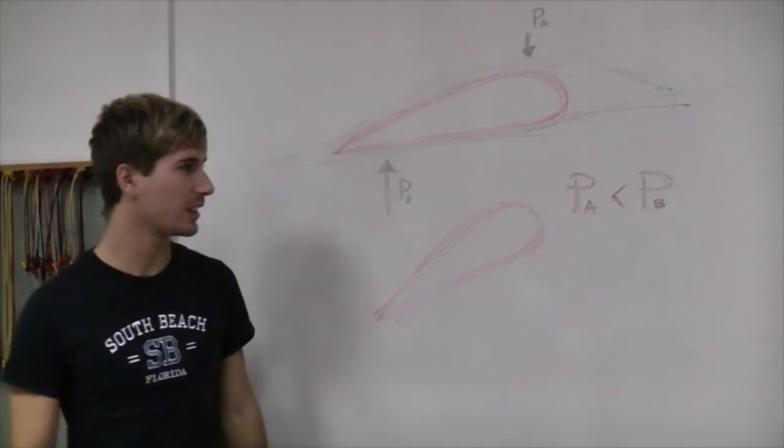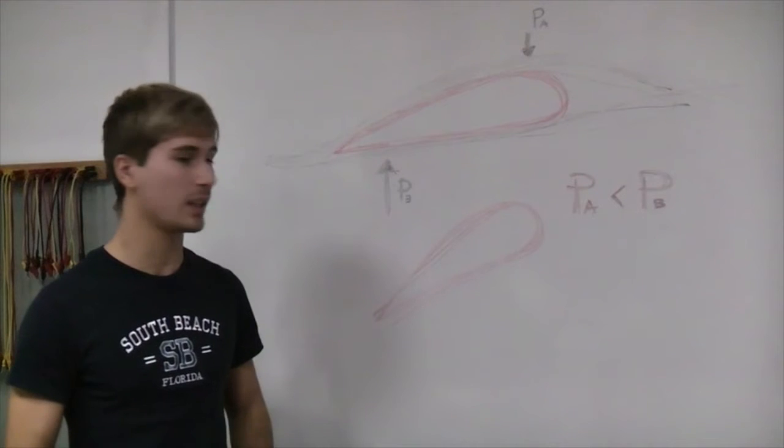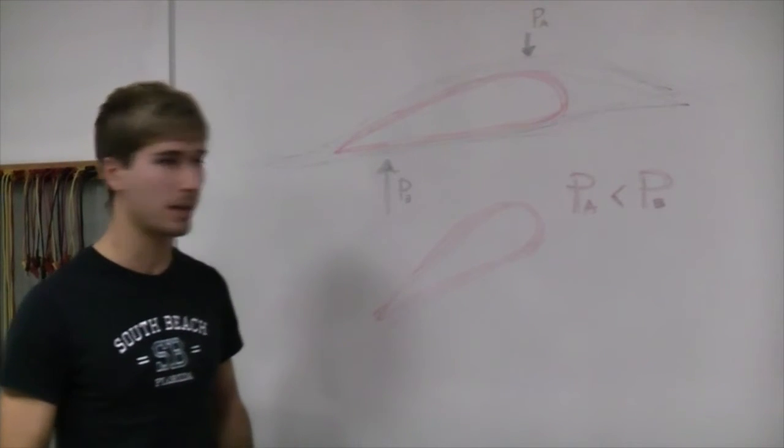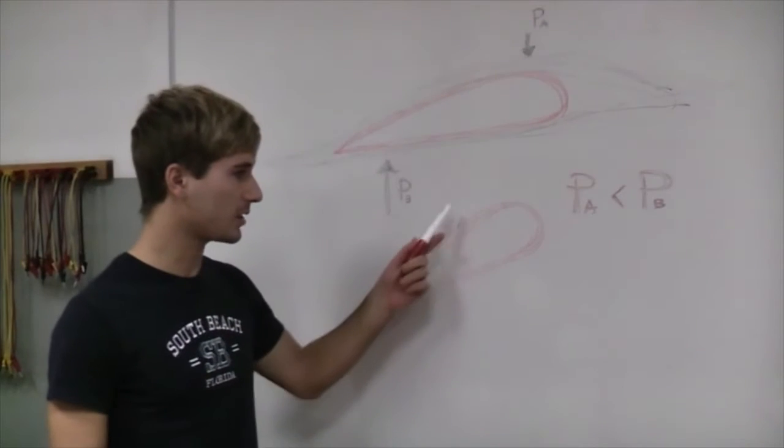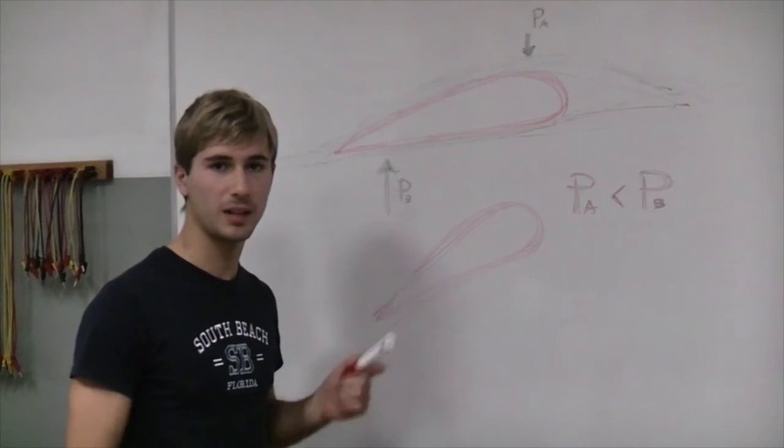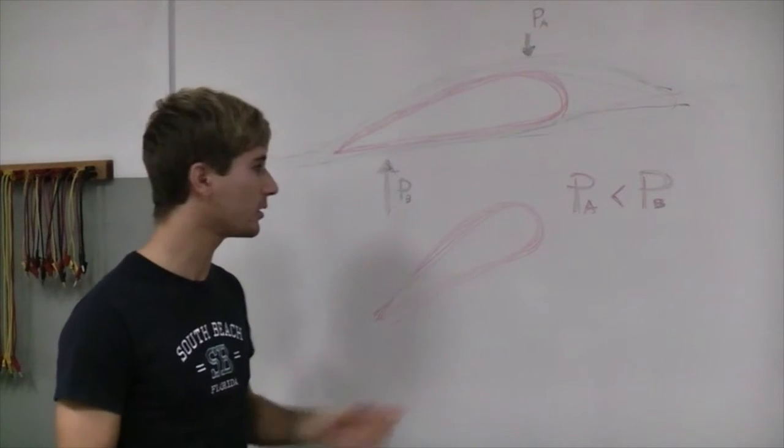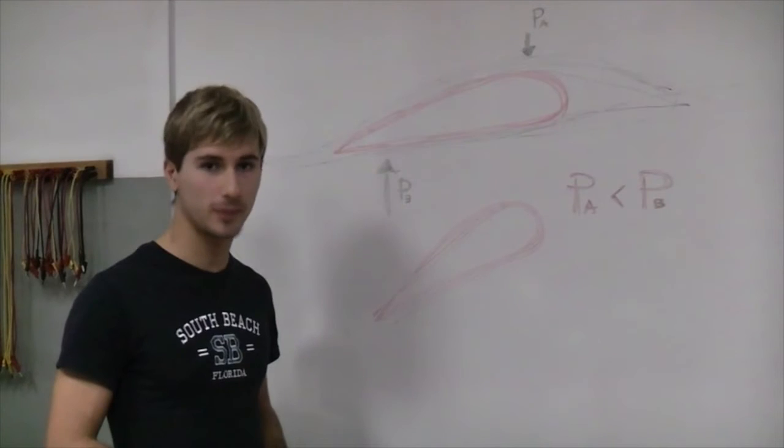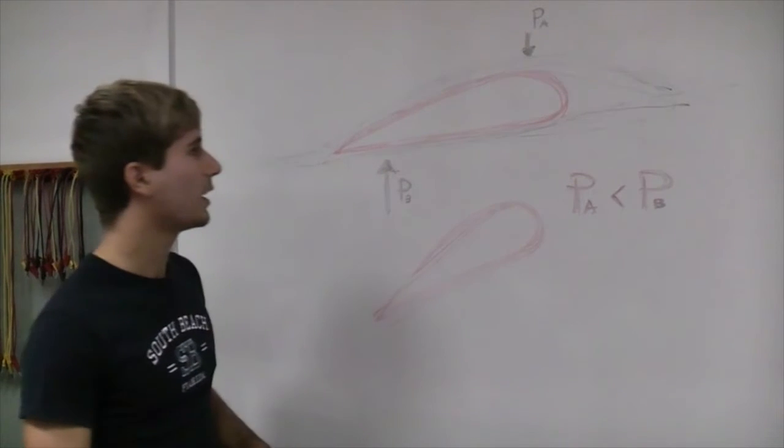We can see that in a still wing of an airplane, the pressure difference is zero, and so the wing doesn't rise up.